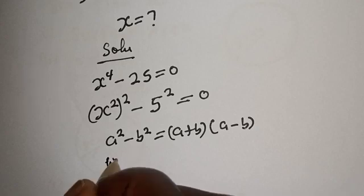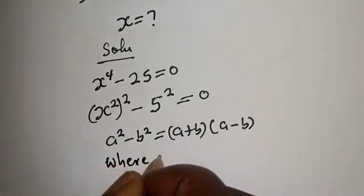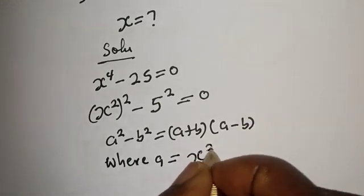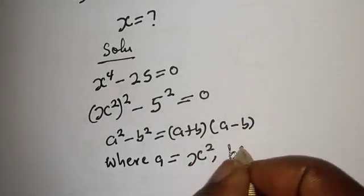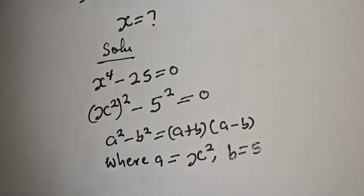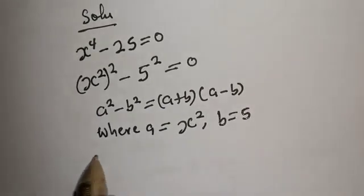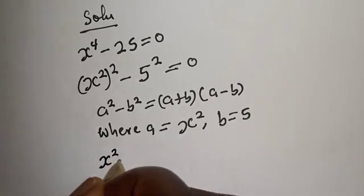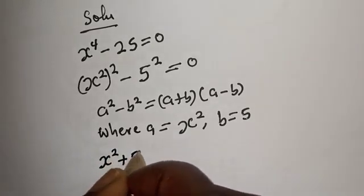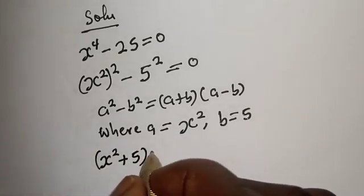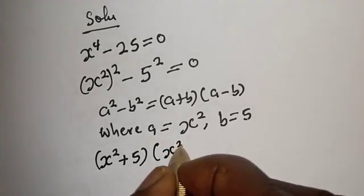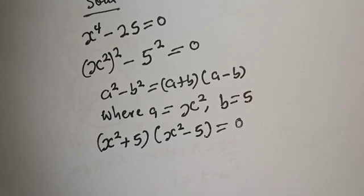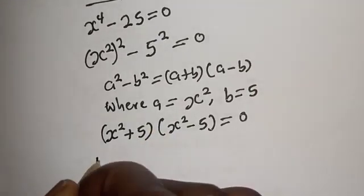Where a is equal to s squared and b is equal to 5. Let's substitute: s squared plus 5, multiplied by s squared minus 5, is equal to zero. There are two cases here.